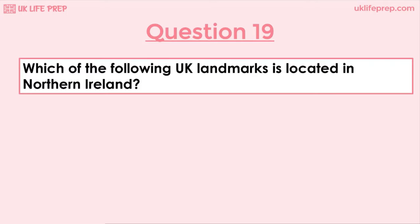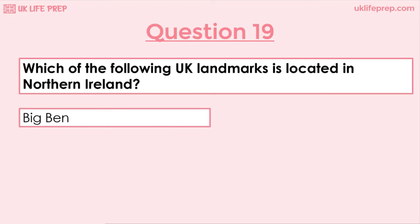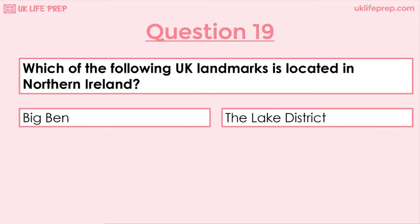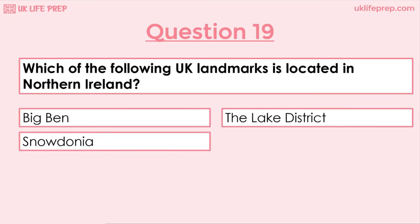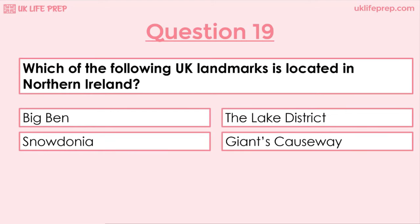Question 19: Which of the following UK landmarks is located in Northern Ireland? Big Ben, the Lake District, Snowdonia or Giant's Causeway? The correct answer is Giant's Causeway. And from the official guide, this is the only landmark located in Northern Ireland.